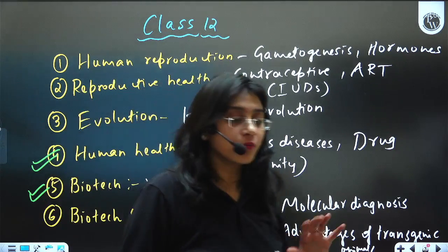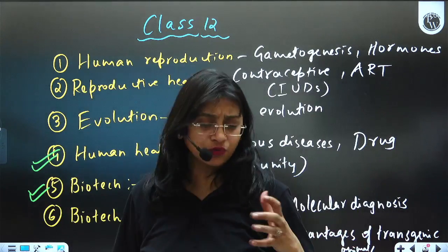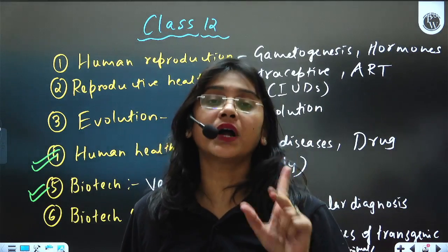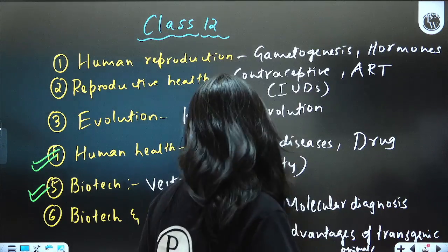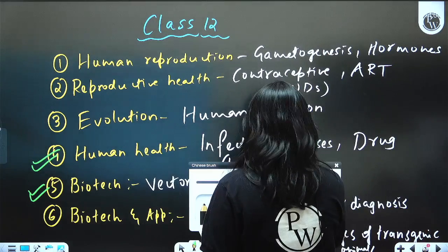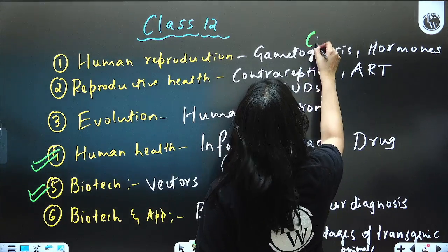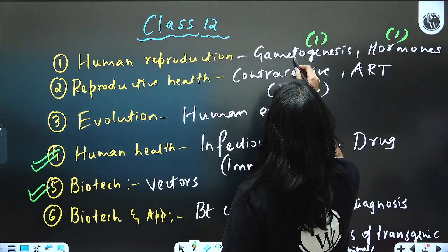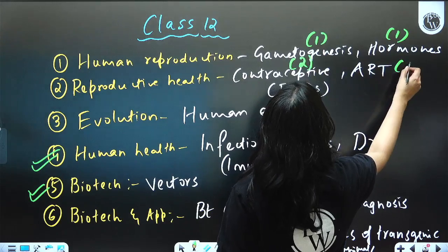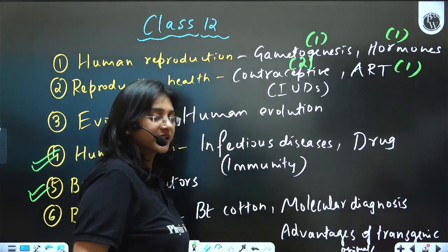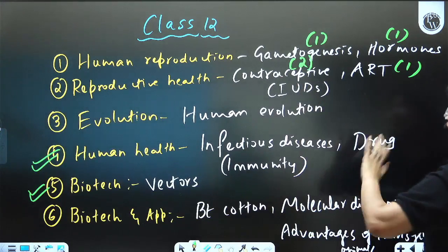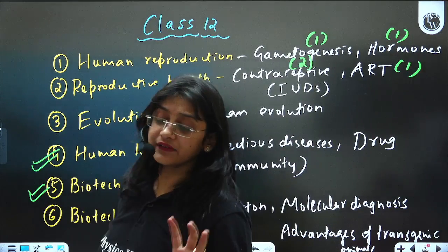From the Reproductive Health chapter, contraceptives is a very broad topic, so one to two questions will for sure be asked from this concept. One question from hormones, two from contraceptives, and one from ART — Assisted Reproductive Technology. In contraceptives, please go through IUDs very well because usually questions are asked from these.